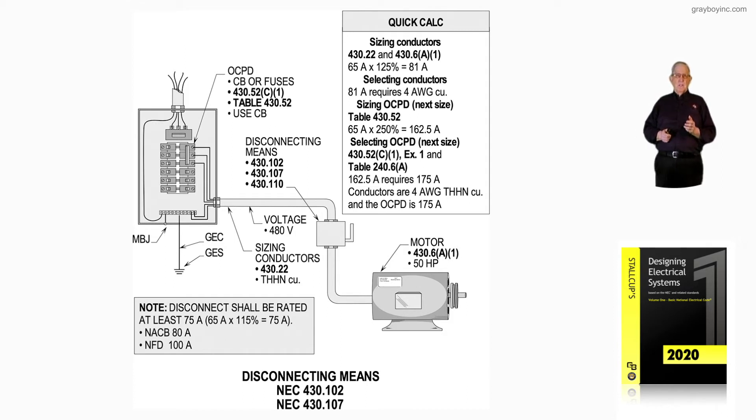Notice the overcurrent device. We start with that to the left at the top, and 430.52C1 and table 430.52 would be the sections used to get a percentage to size a circuit breaker. It would also list what you're choosing: circuit breaker, time-delayed fuse, non-time-delayed fuse, or instantaneous trip settings if permissible. We find all that in our table 430.52.